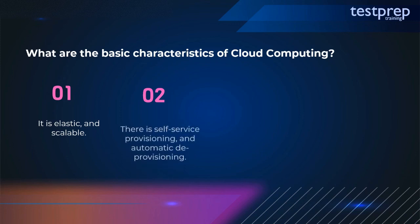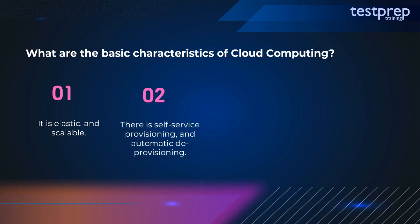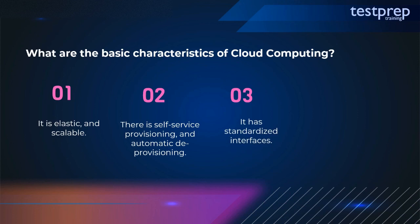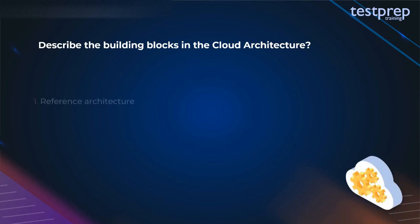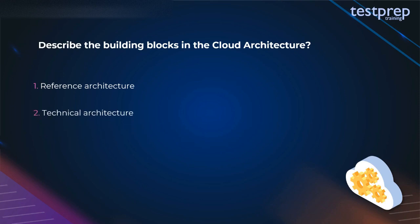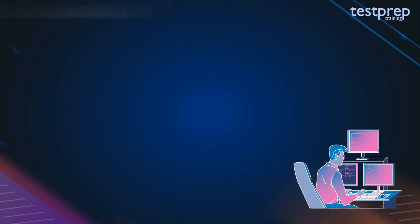Question 45: What are the basic characteristics of cloud computing? First, it is elastic and scalable. Second, there is self-service provisioning and automatic deprovisioning. Third, it has standardized interfaces. Fourth, it has a billing self-service-based usage model. Question 46: Describe the building blocks in cloud architecture. The essential building blocks include: first, reference architecture; second, technical architecture; third, deployment operation architecture.